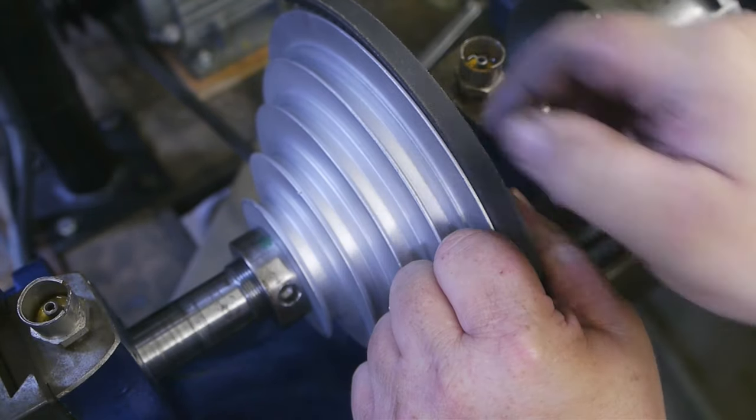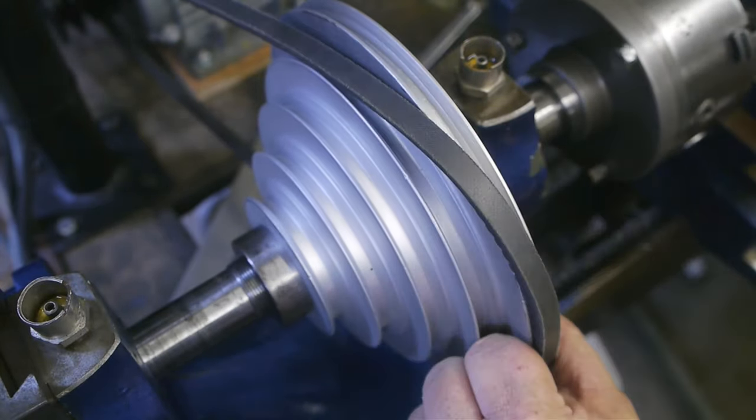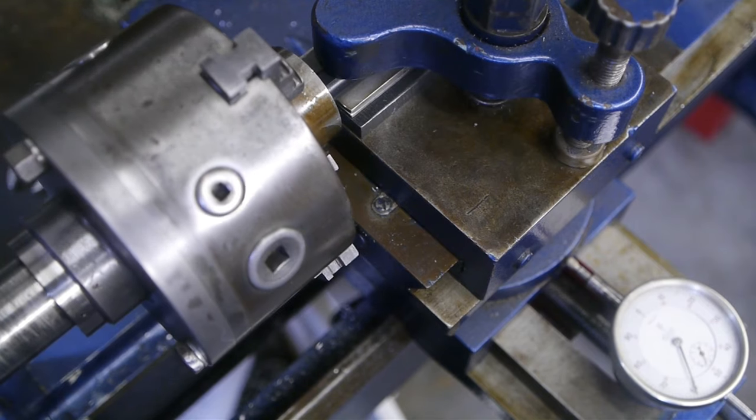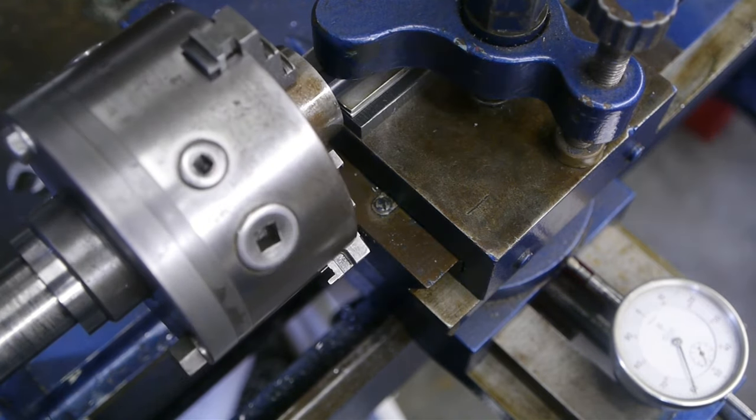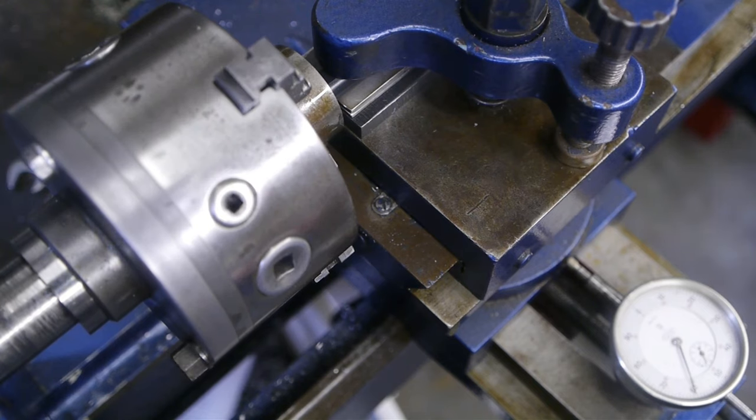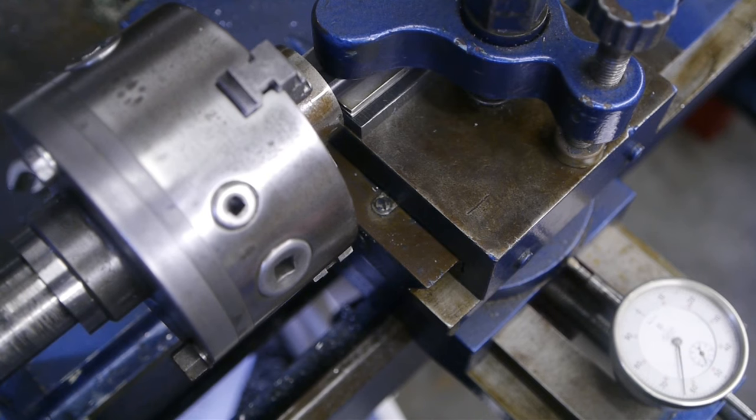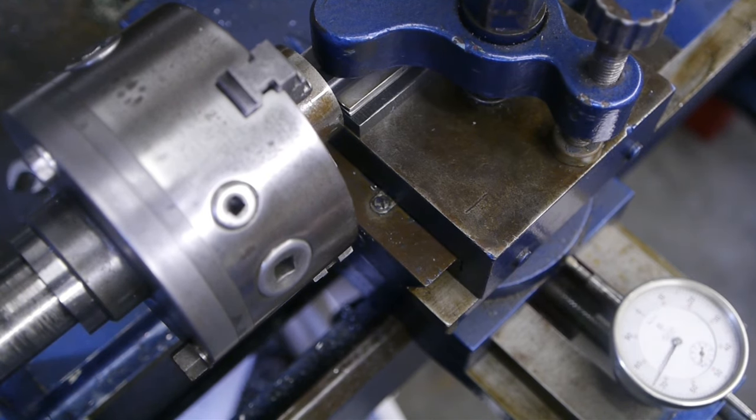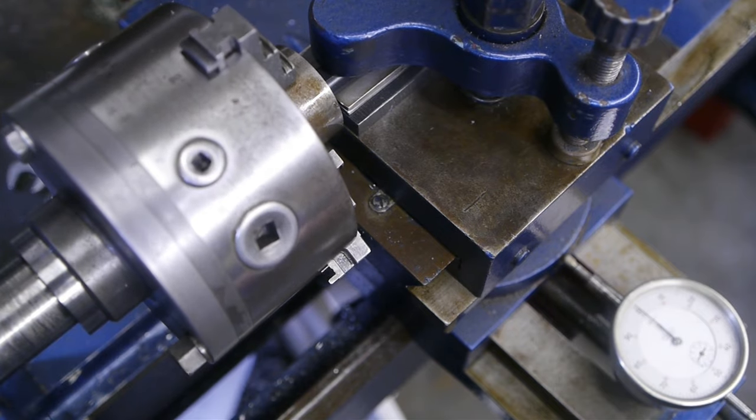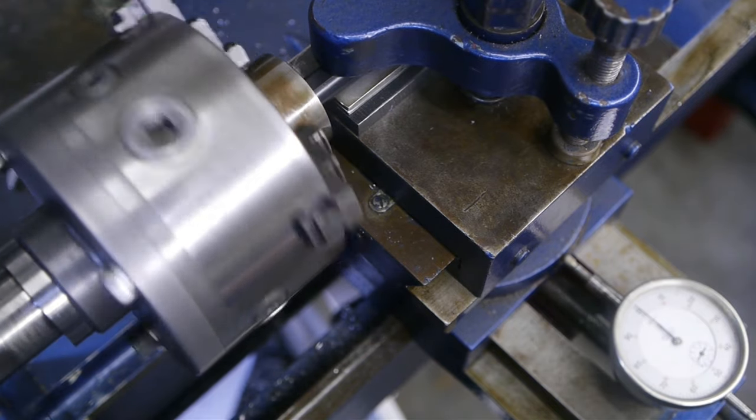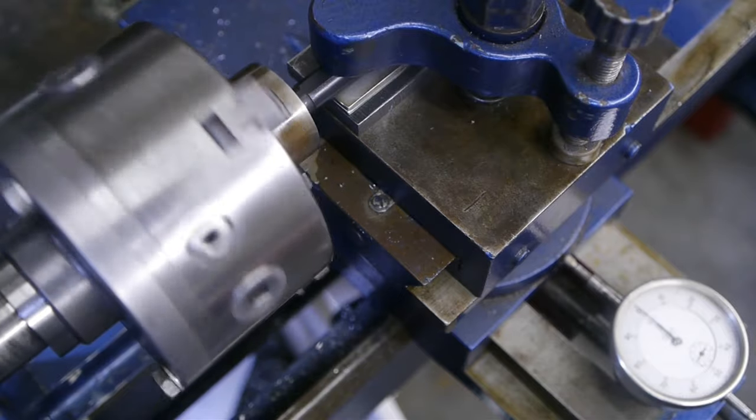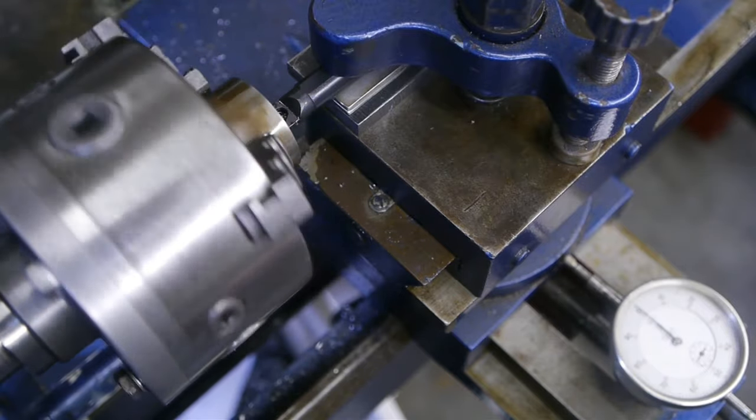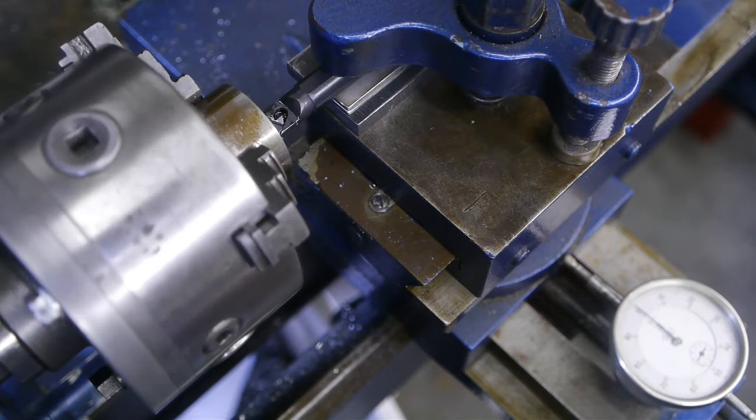I'm now 1.2 millimeters deep. I'm using this dial indicator to keep track of how deep I'm cutting and also for backing out the tool and returning it to the correct position. Currently I'm about 1.6 millimeters deep and I need to go to about 2.5 millimeters.